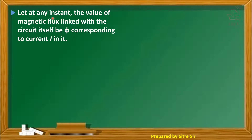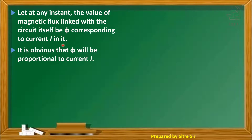Let at any instant the value of magnetic flux linked with the circuit itself be phi, corresponding to the current I in it. It is obvious that phi will be proportional to current I.